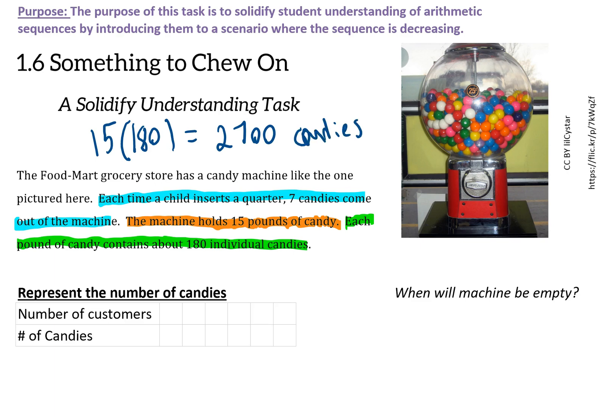We have a scenario where we're starting with 2,700 candies and they're decreasing over time. With zero customers, the number of candies is 2,700. The first customer puts in their quarter, gets seven candies out, bringing us down to 2,693.